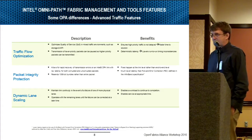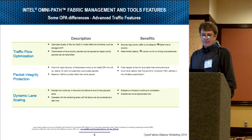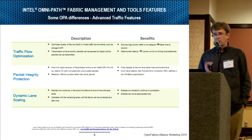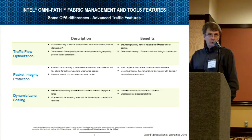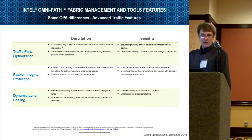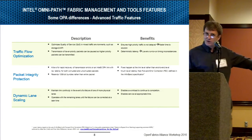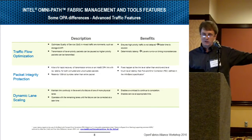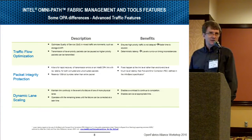Dynamic lane scaling works with the 100-gig links, which have four lanes at 25 gig each. If there are issues with a cable, the link can downgrade dynamically to using three lanes or two lanes, using packet integrity protection to get the data through. This means the job scheduled to run for the last hour will complete and you don't have to restart it because it failed somewhere along the line. You can come back later as an admin to look at things and correct them, but the job will go through with dynamic lane scaling.